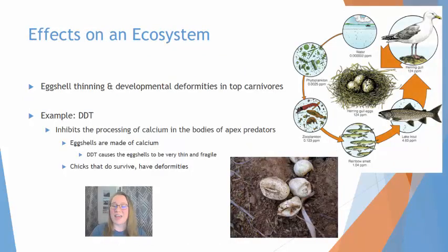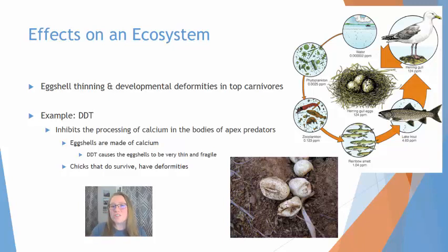Some of the effects that this has include eggshell thinning and developmental deformities in top carnivores. For example, DDT inhibits the processing of calcium in the bodies of apex predators such as eagles and peregrine falcons. Eggshells are made of calcium, and because DDT inhibits calcium processing, it causes these eggshells to be very thin and very fragile.